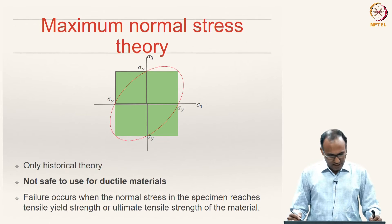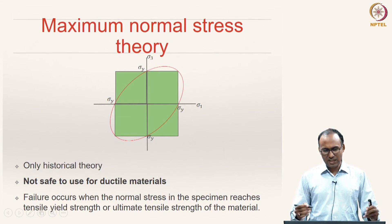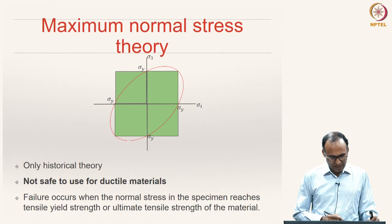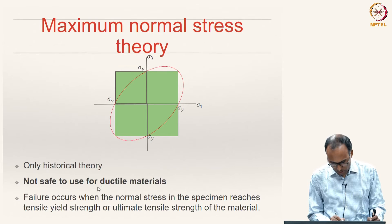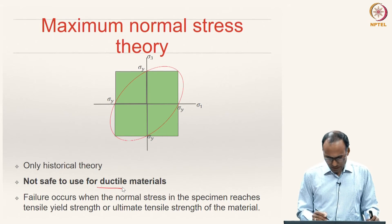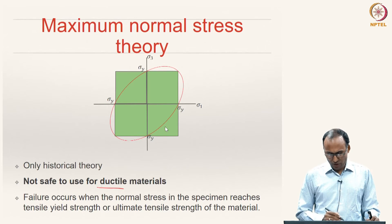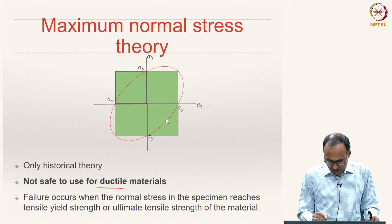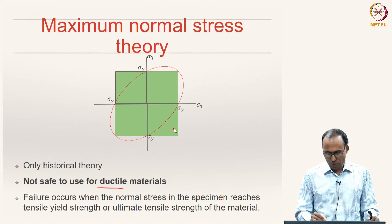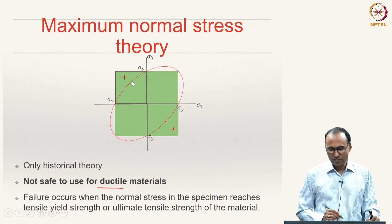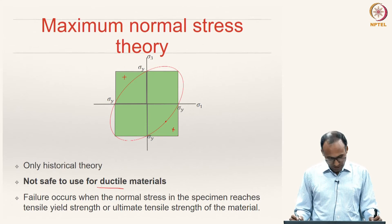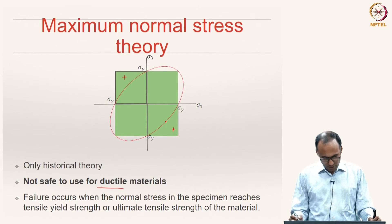We will also look at maximum normal stress theory compared to the other theories — it is only a historical theory and is not safe to use for ductile materials. The distortion energy theory predicts failure in the second and fourth quadrants where maximum normal stress theory says the material is still safe. Hence, maximum normal stress theory should not be used for ductile materials.